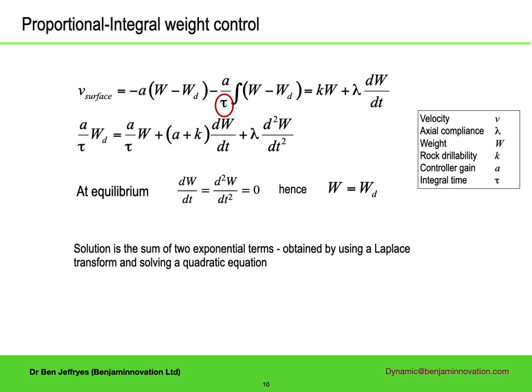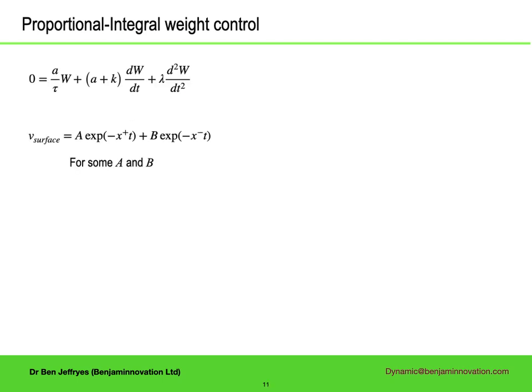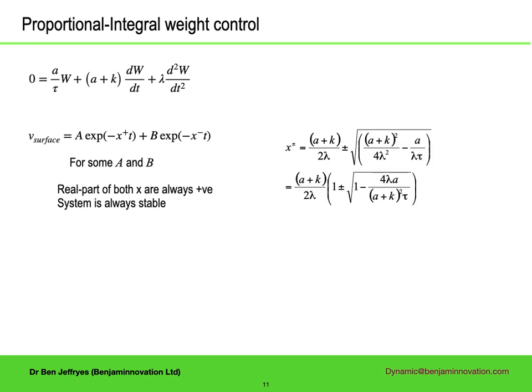Solving the differential equation is easy using a Laplace transform. Ignoring the constant term, the general solution for some constants a and b involves two values x-plus and x-minus given by an explicit expression. In general they may be complex, but their real parts are always positive, which means that the system is always stable — it will always converge, in general to the desired weight.